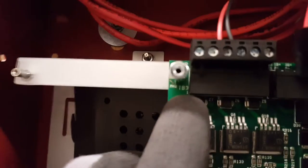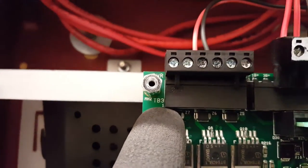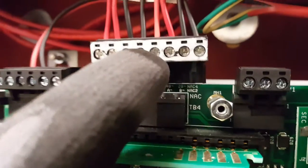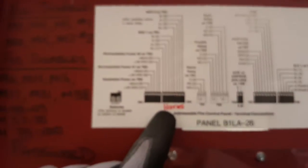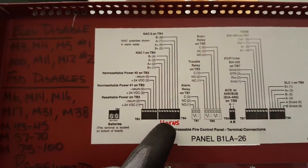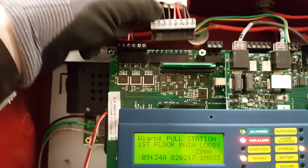What you can see right here is TB3, and you can see right in there that this is TB4. So we know TB4 is horns, and that's how we know that this is the NAC wire to pull.